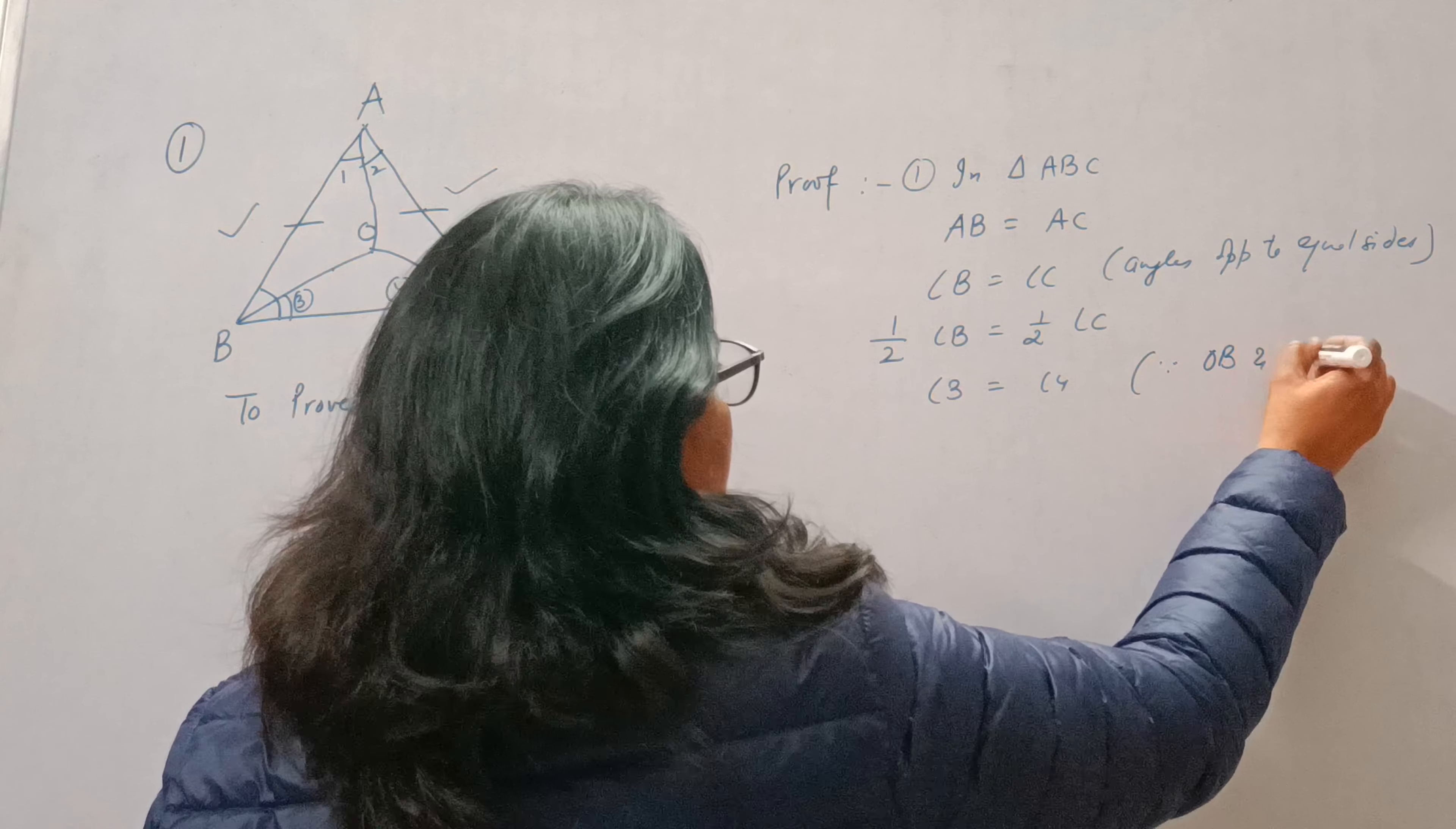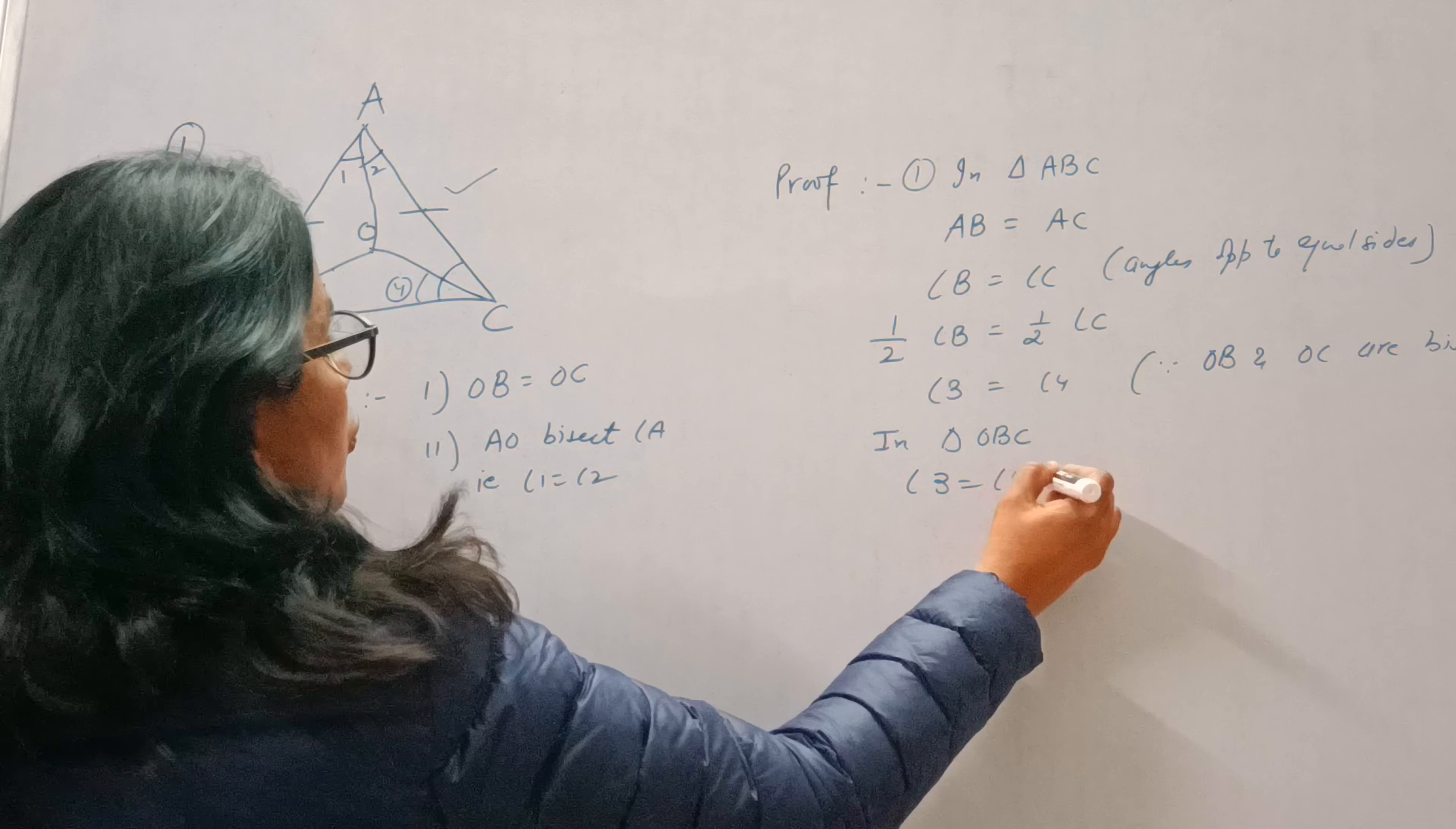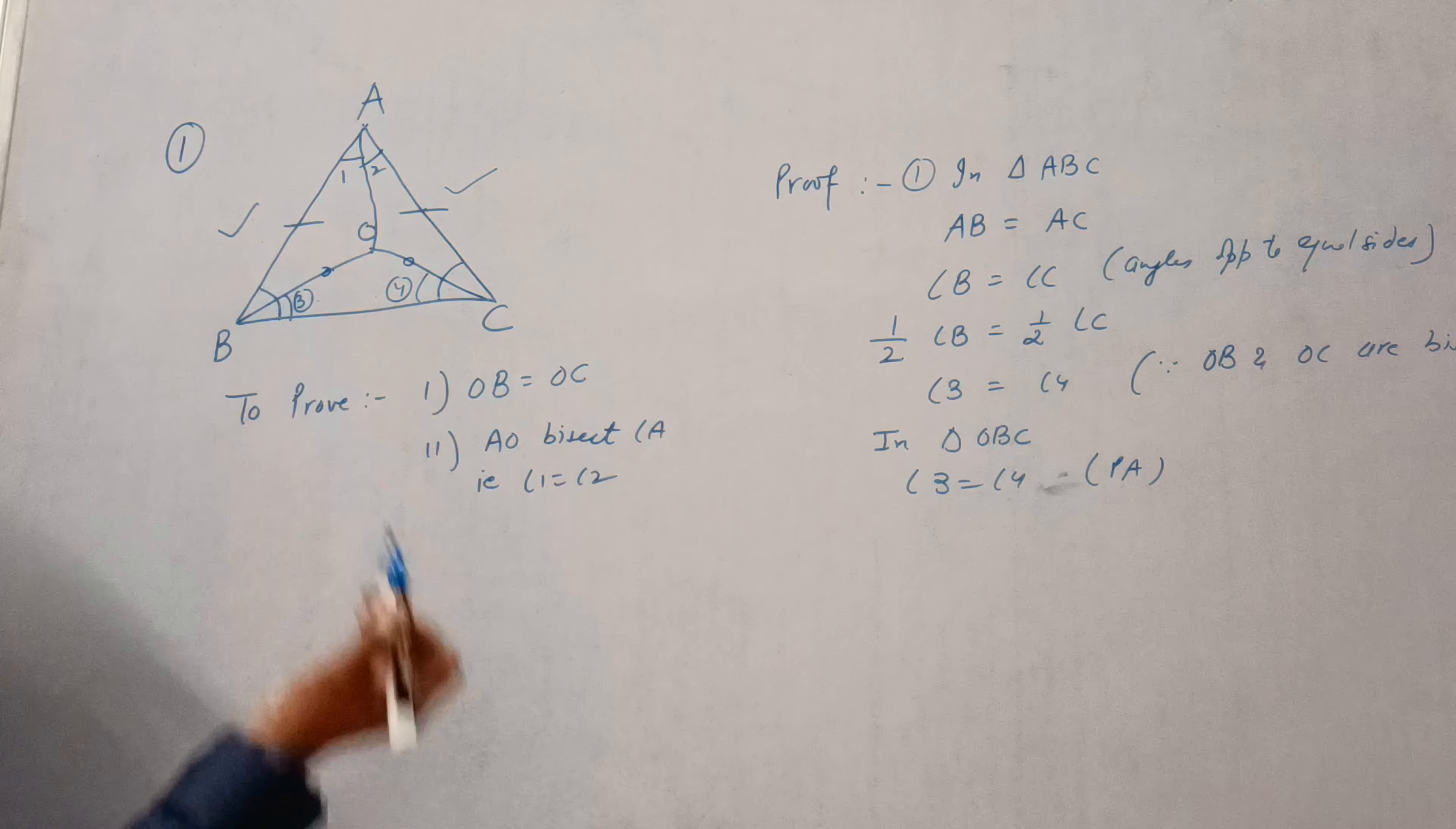Okay, now in triangle OBC, angle 3 equals angle 4, proved above. We have proved angle 3 equals angle 4. Now we know if in a triangle two angles are equal, then sides opposite to them are also equal.